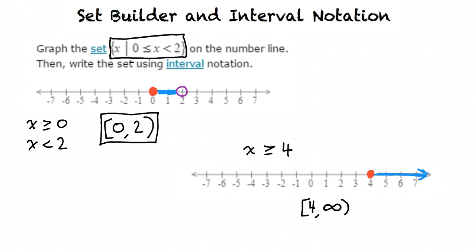Why did you say positive infinity just a minute ago? I said positive infinity because there is also a negative infinity, believe it or not. If we said x is less than or equal to 4, then the arrow would go to the left towards what we call negative infinity, and the interval is written as parenthesis, negative infinity symbol, comma 4, bracket.